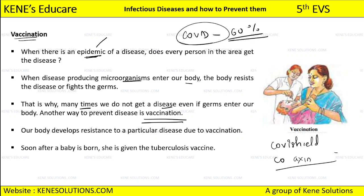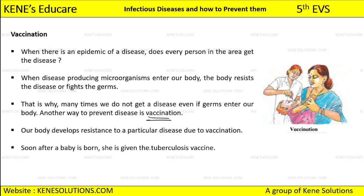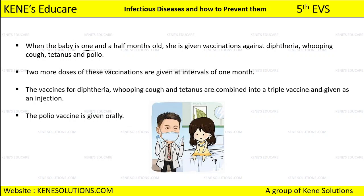Our body develops resistance to a particular disease due to vaccination. The vaccination prevents the disease — even if the COVID virus enters your body, you will not get COVID if you are vaccinated because it makes your body resistant. Soon after a baby is born, she is given the tuberculosis vaccine so that in future, if tuberculosis germs enter the baby's body, the baby will not get tuberculosis. When the baby is one and a half months old, she is given vaccinations against diphtheria, whooping cough, tetanus, and polio.